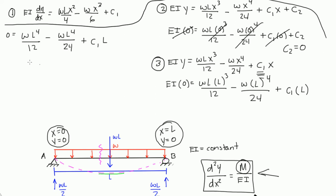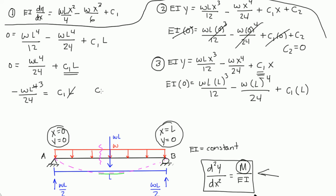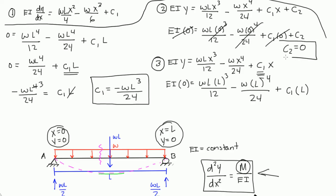Combining the first two terms gives 0 equals WL to the 4th over 24 plus C1 times L. Solving for C1L: negative WL to the 4th over 24 equals C1 times L. Dividing both sides by L, we get C1 equals negative WL cubed over 24. So we found both constants: C1 equals negative WL cubed over 24, and C2 equals 0.